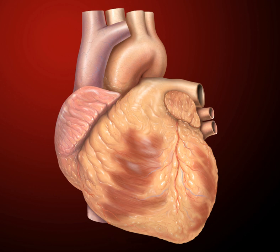The cardiac cycle refers to the sequence of events in which the heart contracts and relaxes with every heartbeat. The period of time during which the ventricles contract, forcing blood out into the aorta and main pulmonary artery, is known as systole, while the period during which the ventricles relax and refill with blood is known as diastole. The atria and ventricles work in concert: in systole when the ventricles are contracting, the atria are relaxed and collecting blood. When the ventricles are relaxed in diastole, the atria contract to pump blood to the ventricles. At the beginning of the cardiac cycle, the ventricles are relaxing and are filled by blood passing through the open mitral and tricuspid valves. After the ventricles have completed most of their filling, the atria contract, forcing further blood into the ventricles and priming the pump.